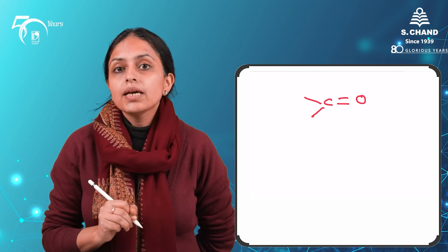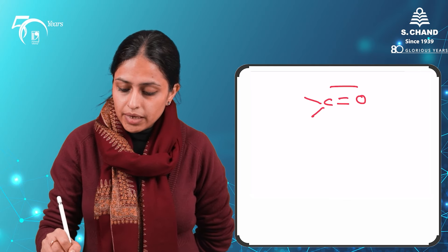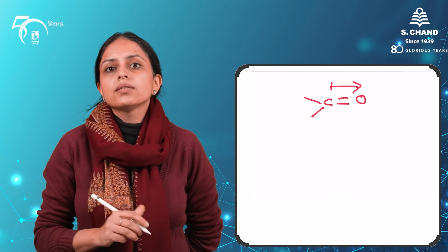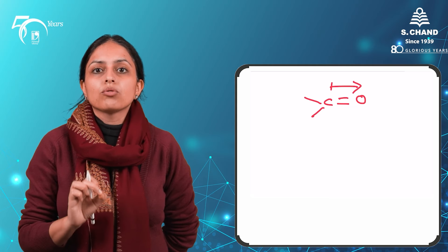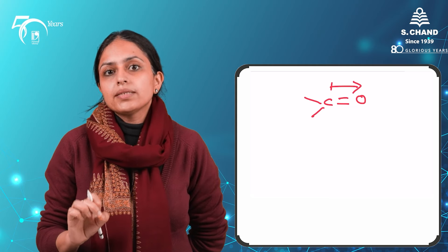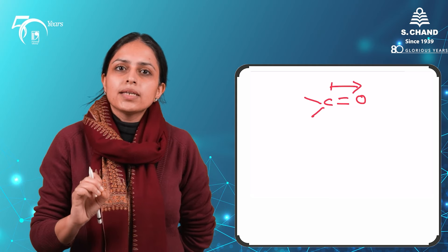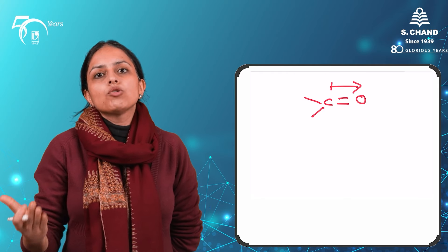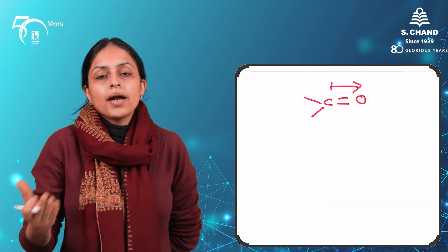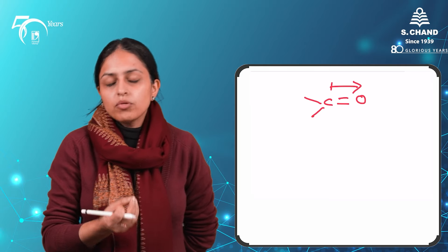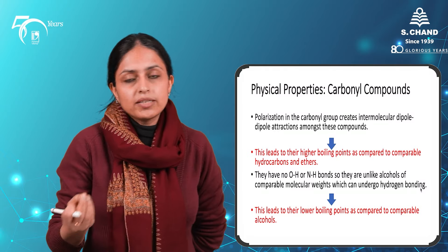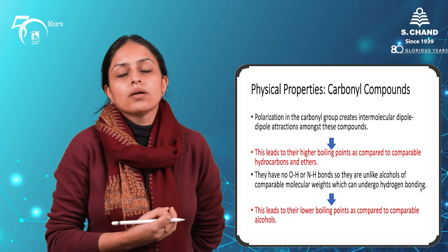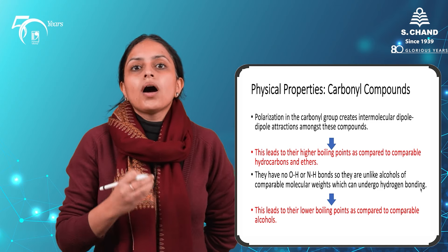Looking at the carbonyl group, we can see it is a polar group — the polarity is towards the oxygen, and there is a net dipole moment in this bond. It is this polarization which gives aldehydes and ketones higher boiling points as compared to their counterpart alkanes. If you compare the boiling points of carbonyl compounds with alcohols, what do you expect — will they be higher or lower?